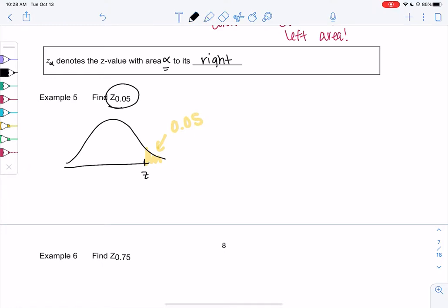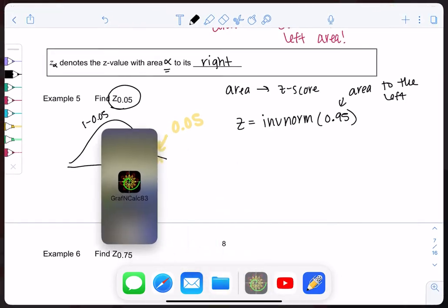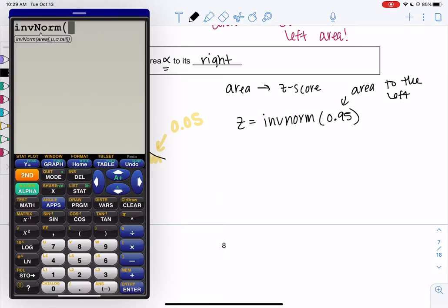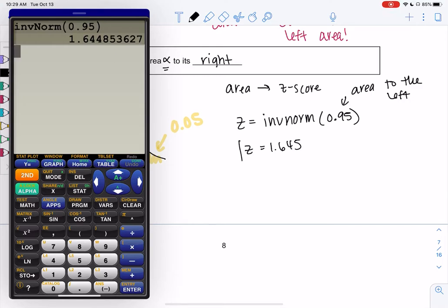I'm not labeling the number line because the z-score is unknown. I'm labeling the area. If we want to find z-score when we have area, that's the inverse function. We're going to say z equals inverse norm, and then we need to figure out the area to the left because that's just the way the calculator is programmed. If we have 0.05 on the right, then there's 0.95 left over because that would be 1 minus 0.05.